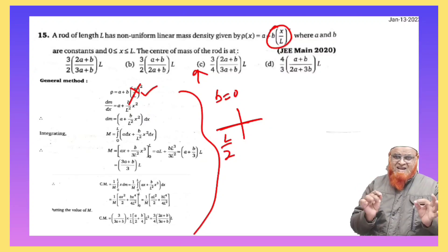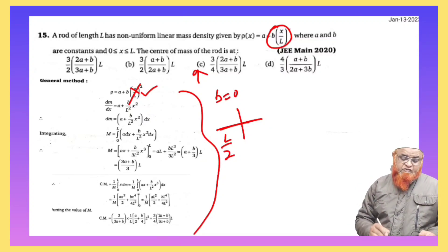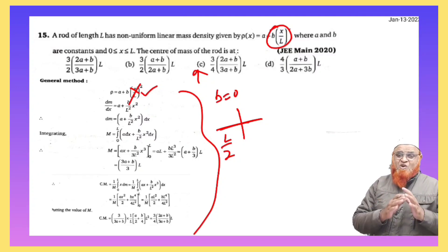the suitable correct option, because if you substitute the value of B as 0, you will get the center of mass of the rod as L by 2.